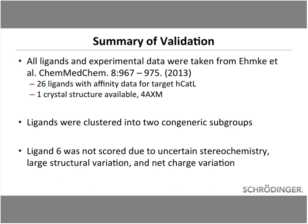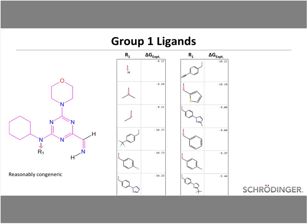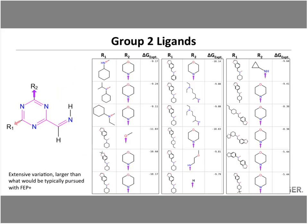A collaborator recommended we review data from the EMCA et al. Chem Med Chem paper reporting 26 ligands with affinity data for HCAT-L with a deposited crystal structure. We clustered the ligands into two congeneric subgroups, excluding ligand 6 due to uncertain stereochemistry, large structural variation, and net charge variation. Group one was reasonably congeneric — the type of congenericity we like to see. Group two was considerably more diverse and was more of a moonshot, representing more diversity than we would typically attempt in routine FEP application.